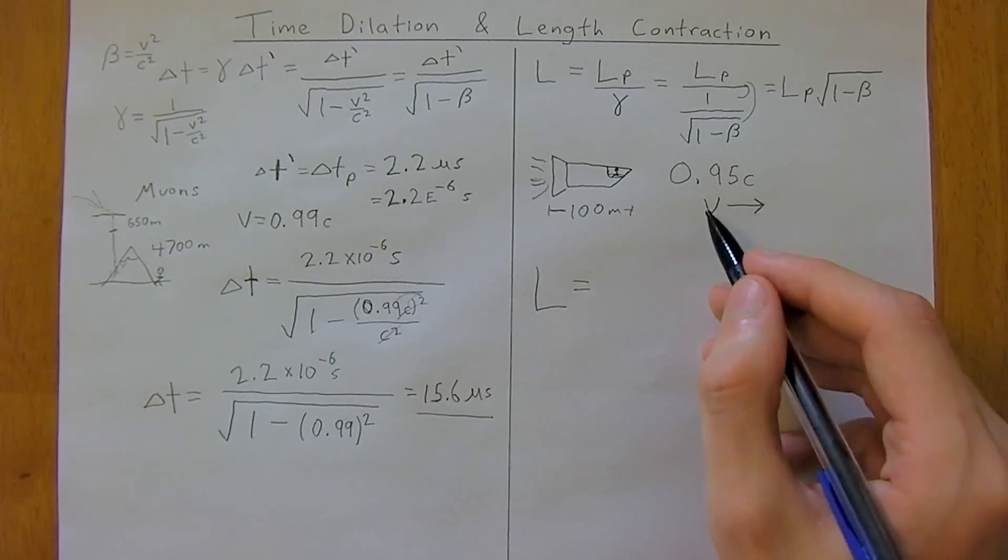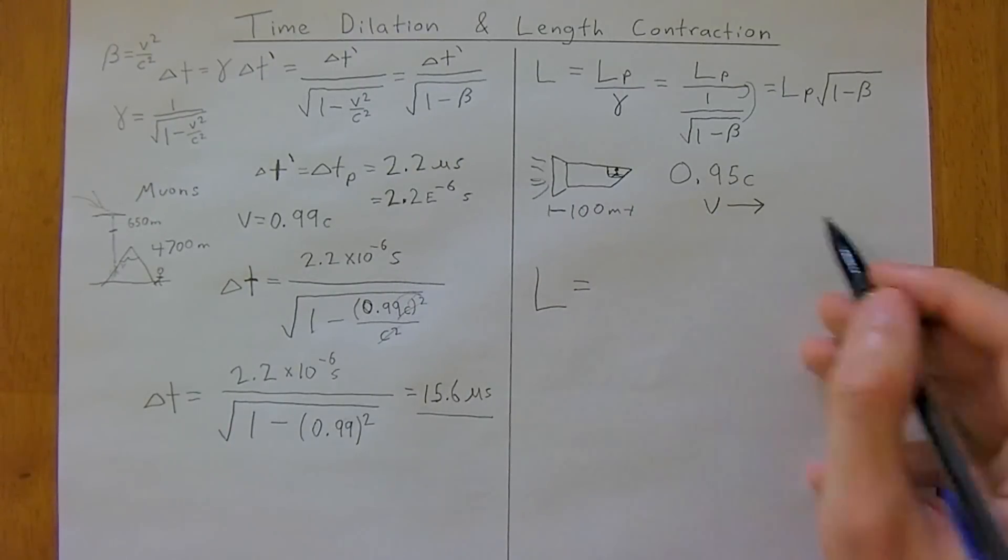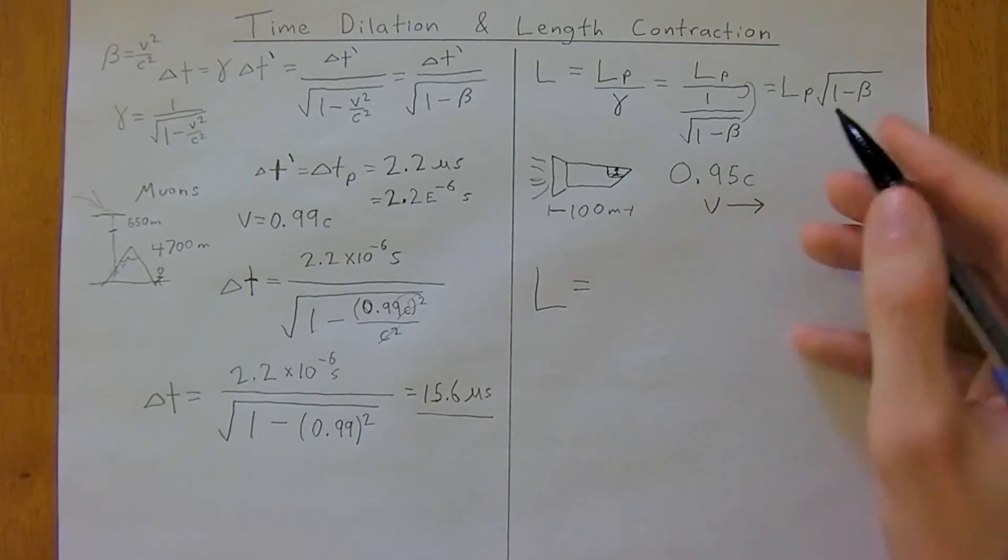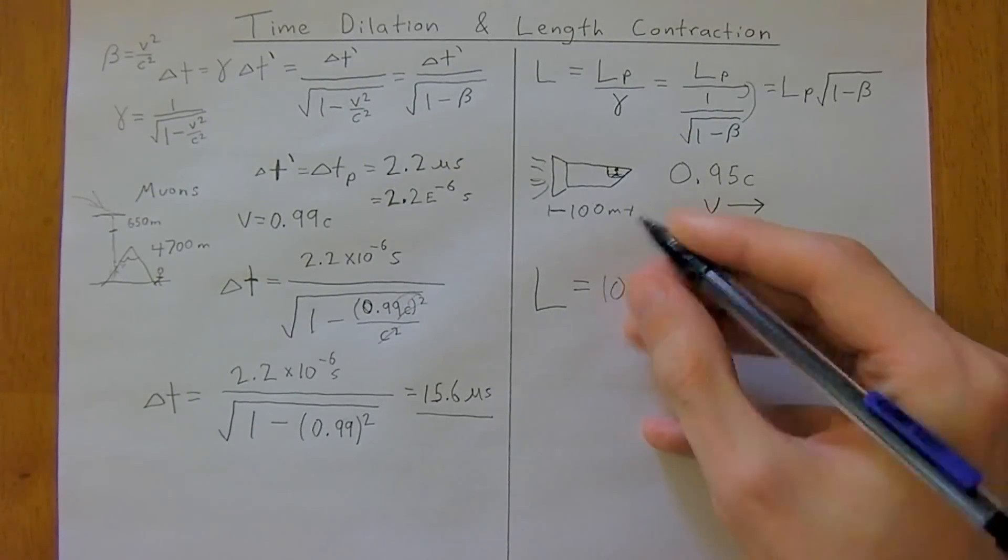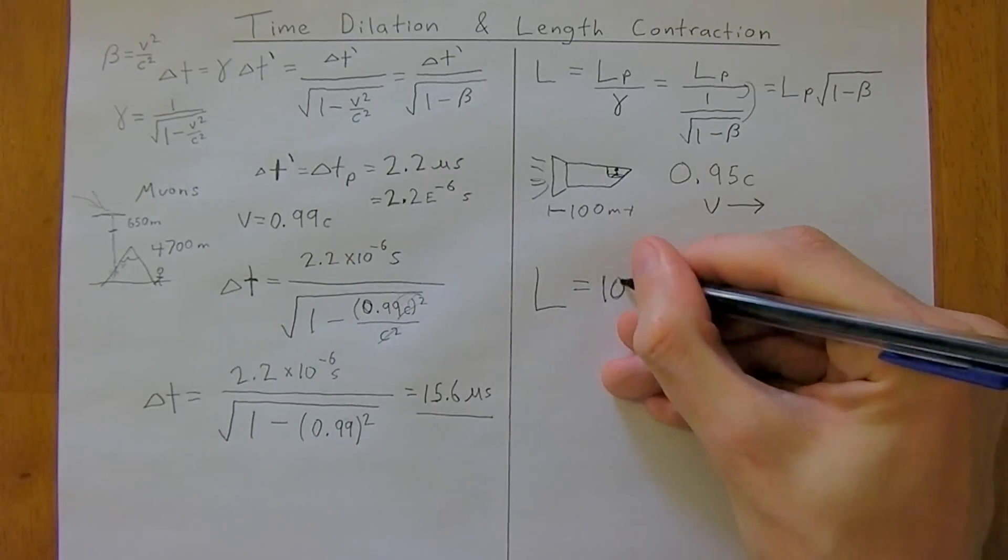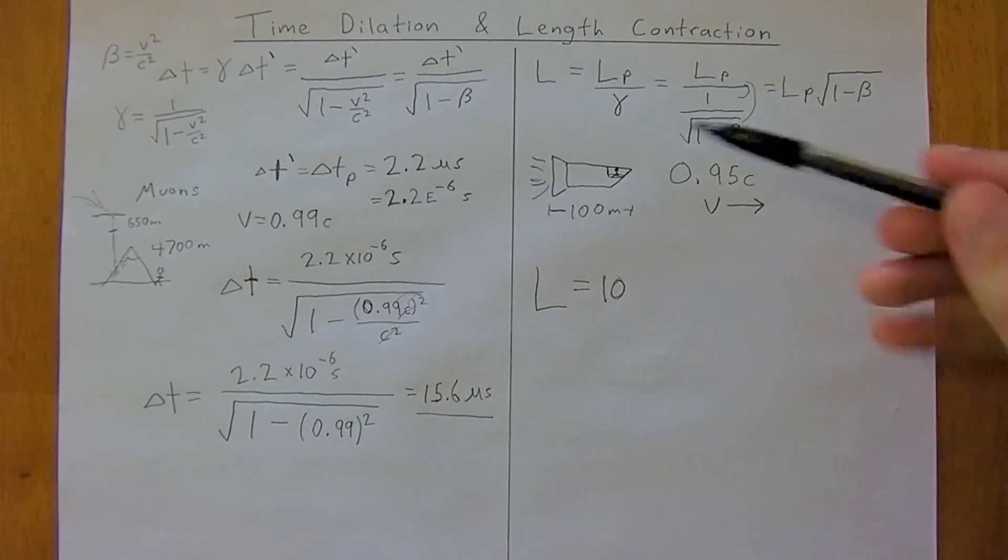So, it's going to contract, in this case, along the x-axis. So, we've got our length proper, which, in this case, is the length measured by the observer,